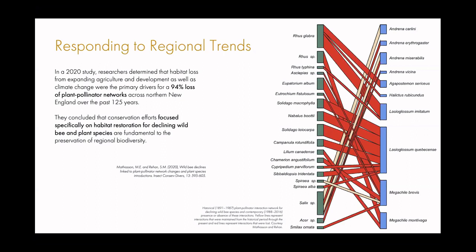This trend is also affecting pollinators. A 2020 study by researchers at the University of New Hampshire and in Canada found that habitat loss — primarily from expanding agriculture and development — as well as climate change was the driver for a 94 percent loss of plant-pollinator networks across northern England over the past 125 years. Their conclusion was that we need to have conservation efforts focused specifically on habitat restoration for declining wild bee and plant species — not common species, not abundant species, and not honeybees.